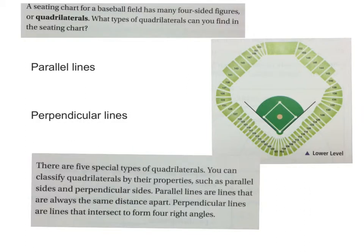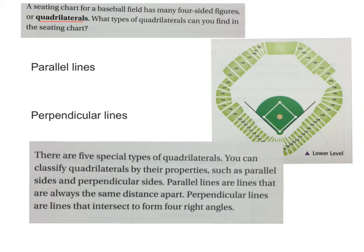The seating chart for the baseball field has many four-sided figures, and we call a four-sided figure a quadrilateral. What types of quadrilaterals can you find in the seating chart? Just like there are specific types of triangles — equilateral, scalene, acute, obtuse — there are different kinds of quadrilaterals. There are five special types of quadrilaterals, and we can determine what kind based on their properties, such as parallel sides or perpendicular sides.